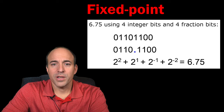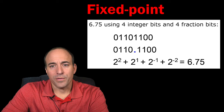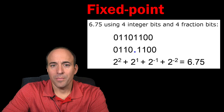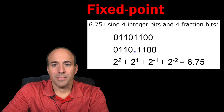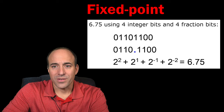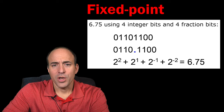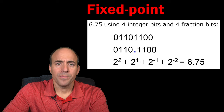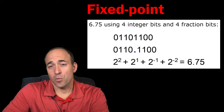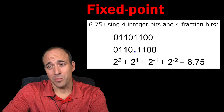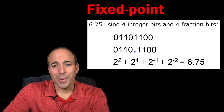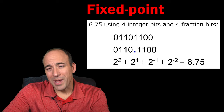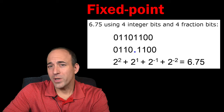A fixed-point number is a value with an assumed power-of-2 scaling factor. For example, if we have an 8-bit fixed-point value and we decide to make the lower 4 bits fractional bits — that is, we assume that the rightmost 4 bits are to the right of the radix point — then the value stored is being implicitly scaled by 2 to the power of negative 4, or 1/16.